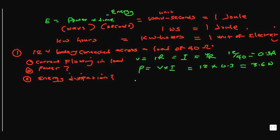For energy dissipation, energy equals power times time. We have a power of 3.6 watts, and the time is 2 minutes, which is 2 times 60 seconds. So energy equals 120 times 3.6 — that gives us 432 joules.